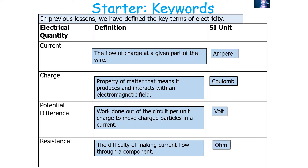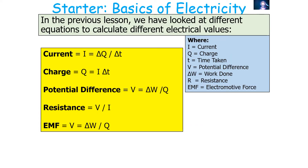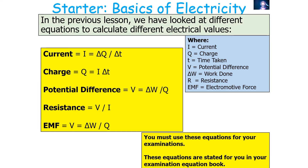We've looked in previous lessons at the equations which link these quantities together. Current equals charge divided by time. Charge equals current times time. Potential difference equals work done divided by charge. Resistance equals potential difference divided by current. And EMF equals work done divided by charge. You must be able to use these equations for your examinations — they are provided in the examination equation book.